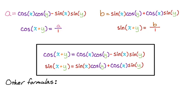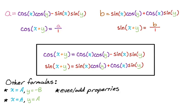Those are the sum formulas. There are other formulas you can get — difference formulas like cosine of x minus y, and double angle formulas like cosine 2x or sine 2x. Just make clever substitutions: let x equal A and y equal negative B for difference formulas, then use even and odd properties. For double angle formulas, let x equal A and y equal A, and you get cosine 2A, sine 2A.